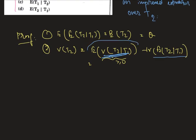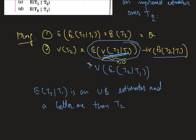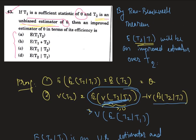If we drop this positive term, we get that Var(T2) is greater than Var(E(T2|T1)). So we can say that E(T2|T1) is an unbiased estimator and a better one than T2. Therefore the correct option is option D.